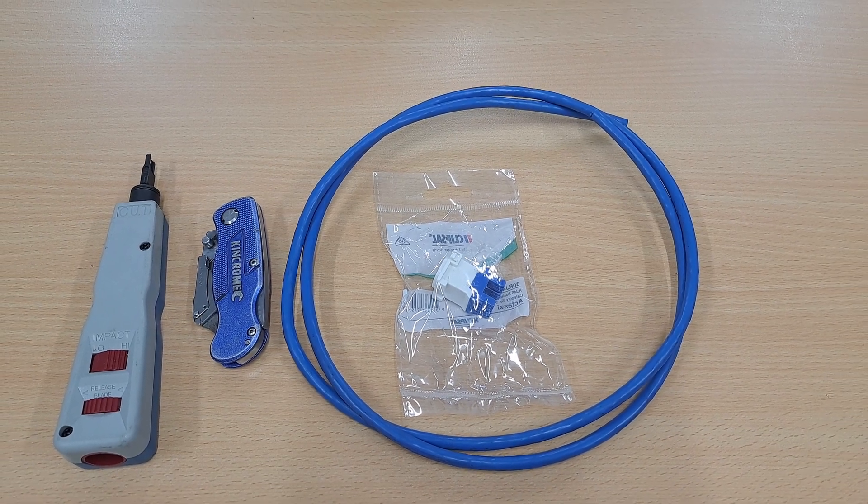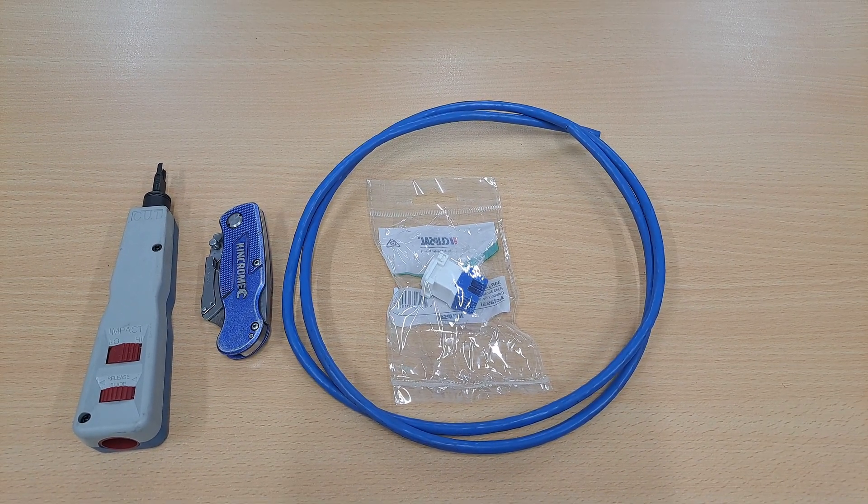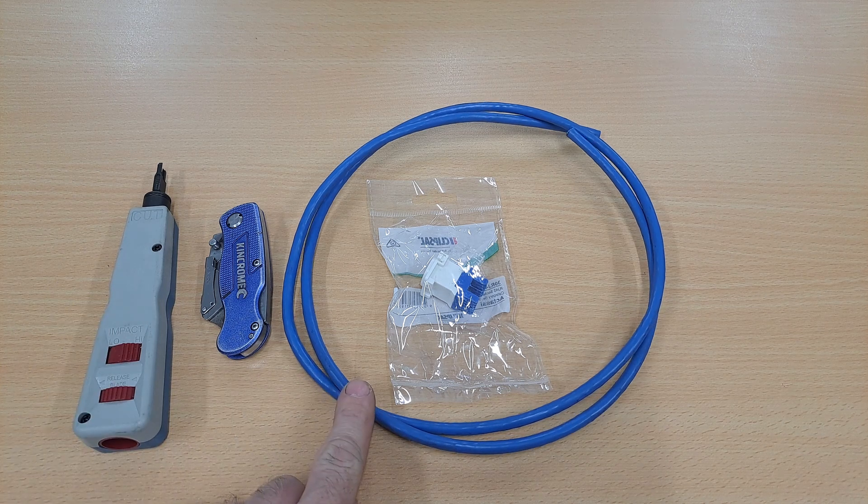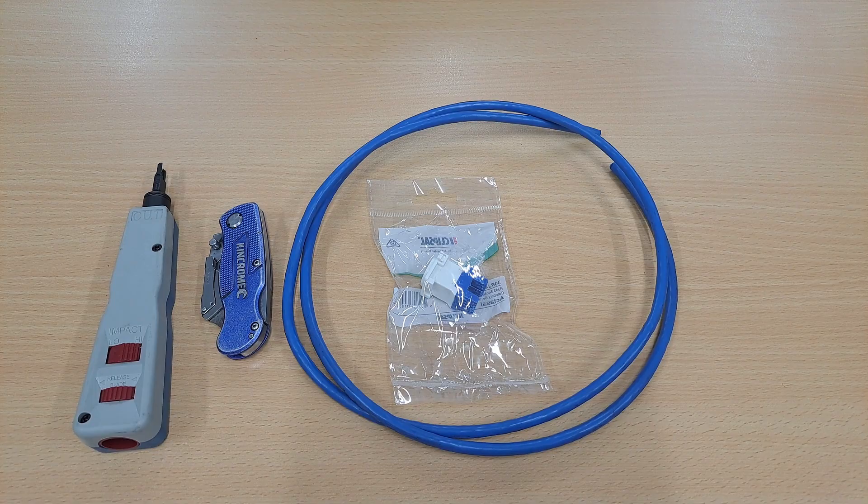Today we're going to be terminating an RJ45 jack and these are the parts you're going to need. You're going to need a punch down tool, a knife, some cat six cable and an RJ45 jack.